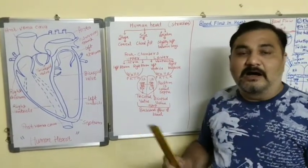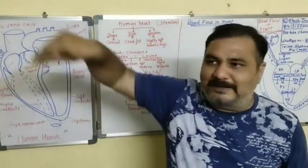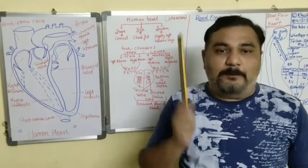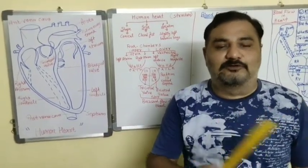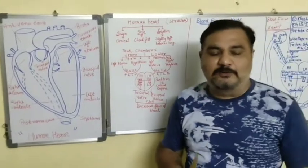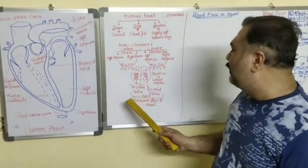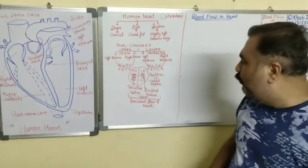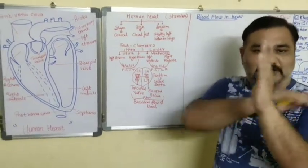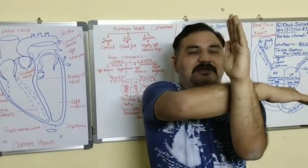Now, just like a hall can be partitioned using wood or aluminum, the heart also has partitions dividing its chambers. But in the heart, the partition is not simply called a partition - it is called septa. The four partitions in the heart are known as septa.